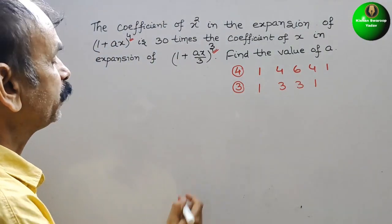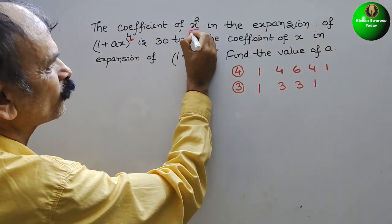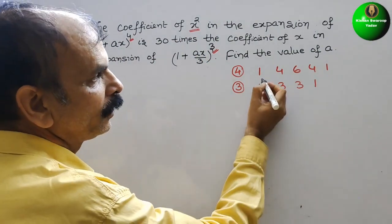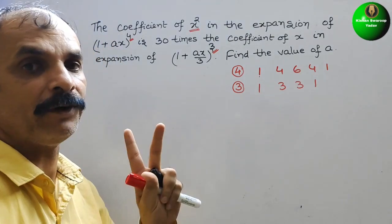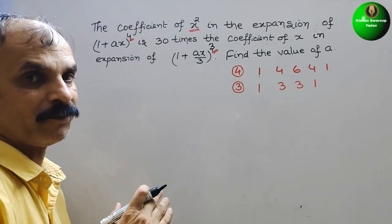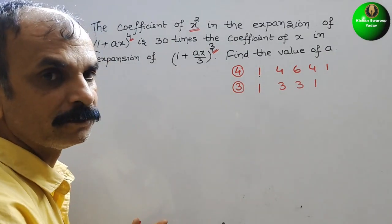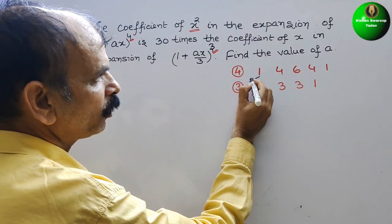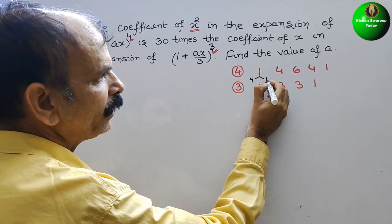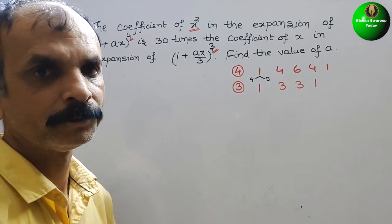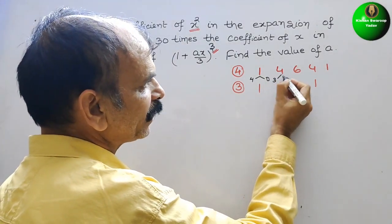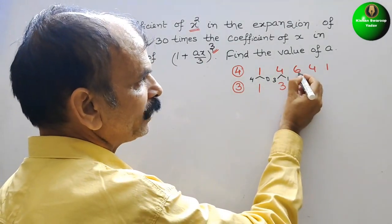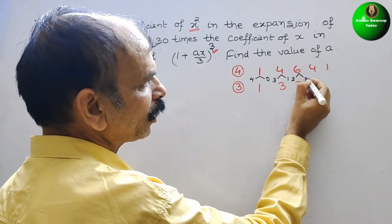Now, in the first expansion (1 + ax)⁴, they have asked for the x² term. The terms go from power 4 down to 0 for the first term, and 0 up for the second term. For the x² term, the coefficient from Pascal's triangle is 6, and both terms will be squared.